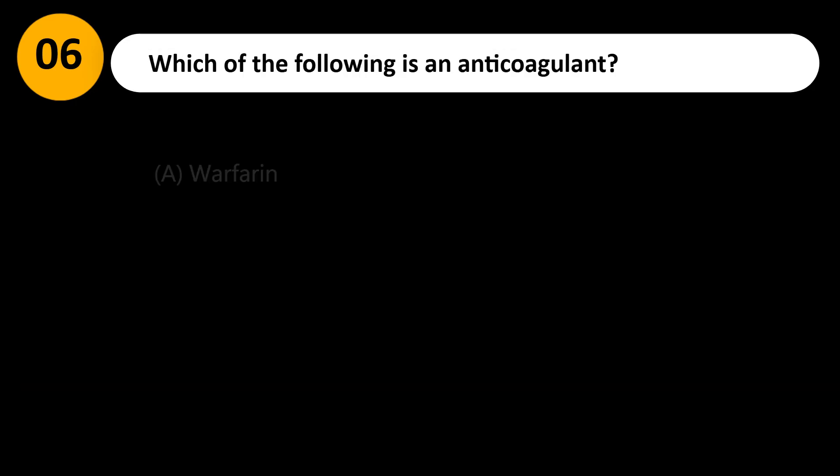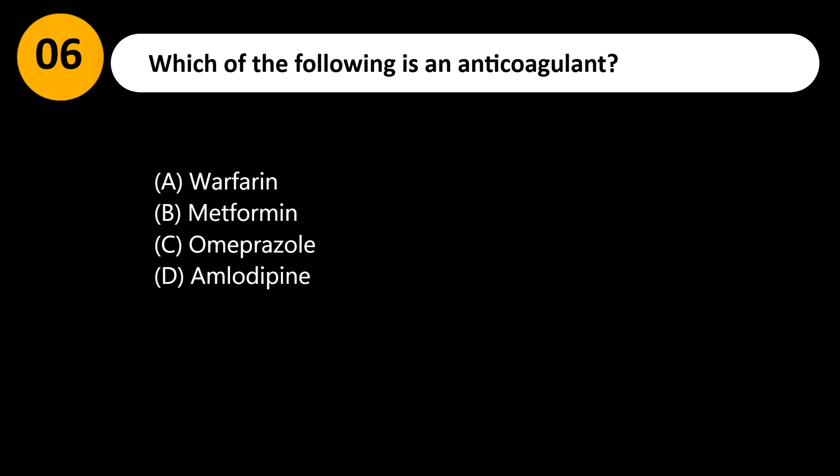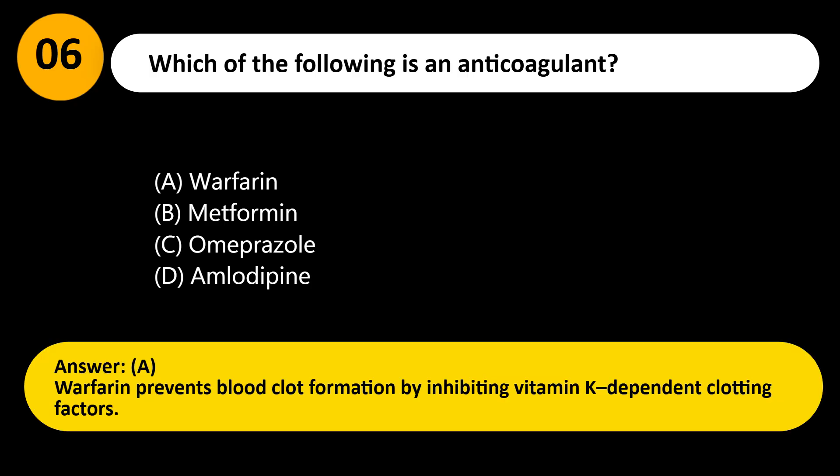Which of the following is an anticoagulant? A. Warfarin. B. Metformin. C. Omeprazole. D. Amlodipine. Answer: A. Warfarin prevents blood clot formation by inhibiting vitamin K-dependent clotting factors.